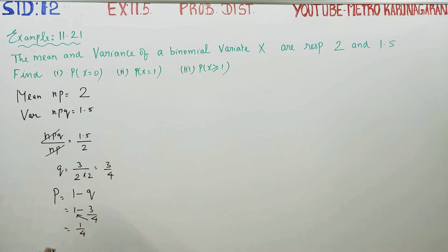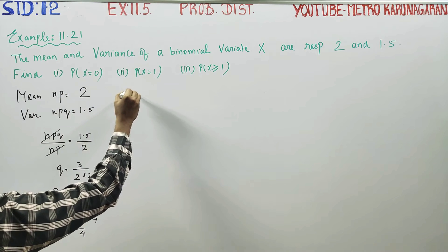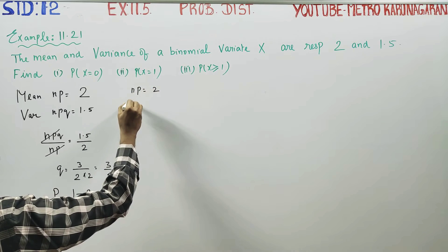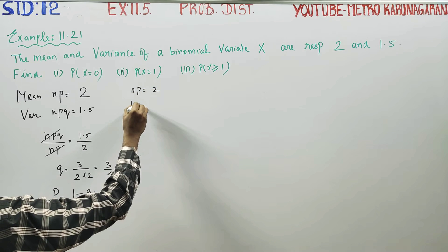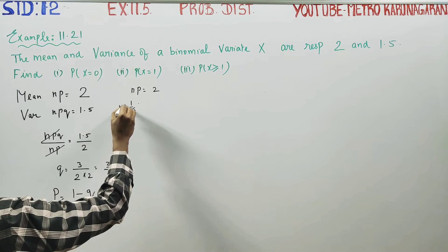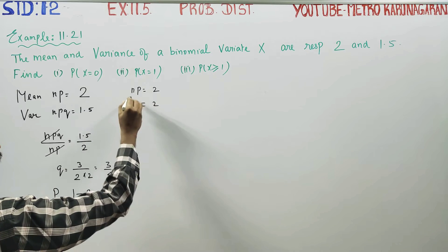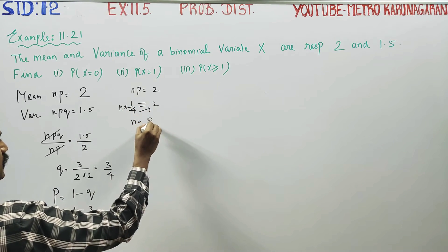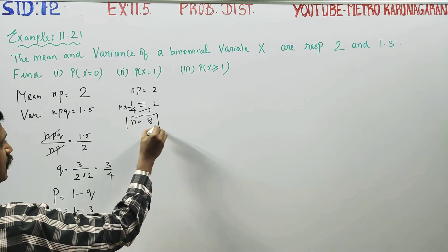p is equal to 1 by 4, n is equal to 2. n into 1 by 4, n is equal to 8. This is what you have to find for the answer.